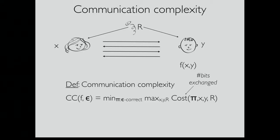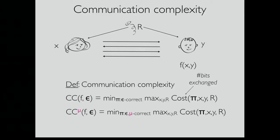You might also consider what happens if you have a prior distribution on the inputs. Maybe some inputs are not so frequent, and you might allow them to have a little more than epsilon error, just as long as on average over the distribution the probability of error is bounded by epsilon. For this talk we're just going to be talking about Boolean functions and we're also going to allow shared randomness between the players for free.